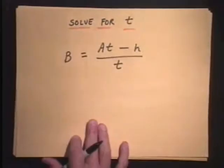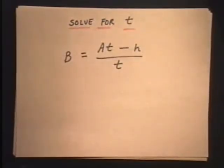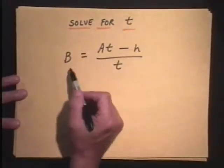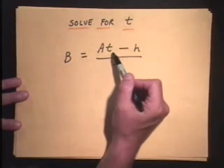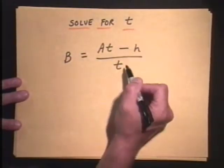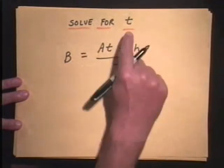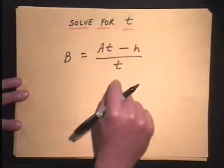So that one kind of fell right into our lap just by multiplying through by the common denominator. So life is good. Let's look at one more here that looks a little bit more formidable. We have Bt equals At minus h, all divided by t, and we want to solve for t here.